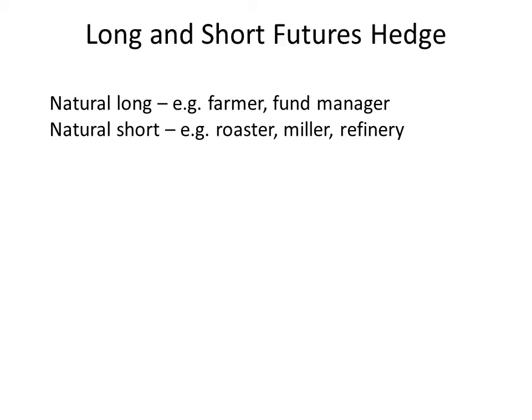Similarly, fund managers with portfolios of equities, bonds, or real estate can manage their portfolio using futures. A natural short includes the roaster, the miller, or the oil refinery — entities that are short of the underlying asset. An oil refinery, for example, constantly replenishes its crude oil stock for the refining process and is concerned that crude oil prices may rise. So a natural short worries about rising prices, whereas a natural long is always concerned about prices falling.